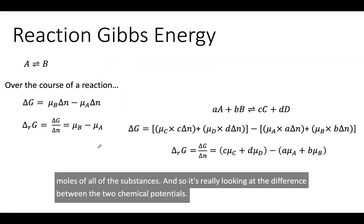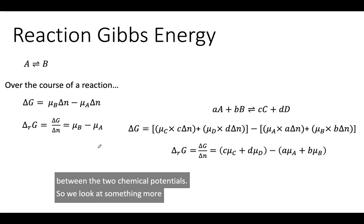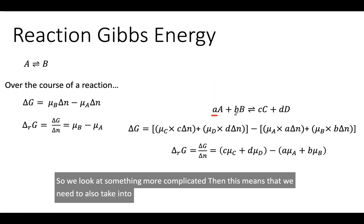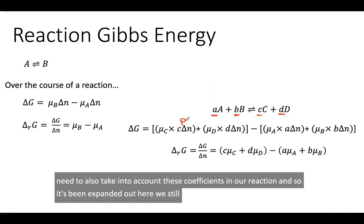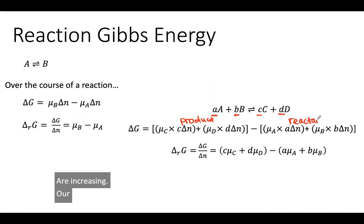If we look at something more complicated, then this means that we need to also take into account these coefficients in our reaction. And so it's been expanded out here. We still have our products are increasing, our reactants are being used up and so they're going to decrease, which is why we have that negative sign.